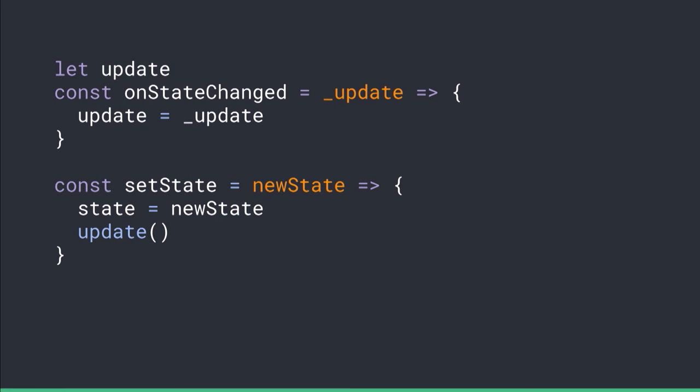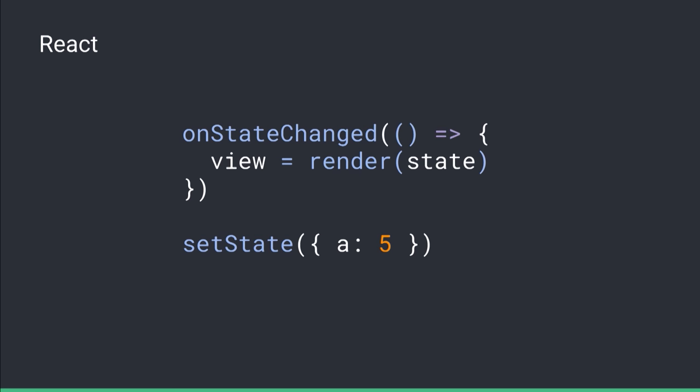So now the question is: how does the application actually know when to re-run this function? Well, let's find out — let's write some code. This is our extremely simple implementation of onStateChange. We just take the update function and save it somewhere. Then we expose a function called setState — it takes the new state, replaces the state, and calls the saved update function. And voilà! We've implemented React.